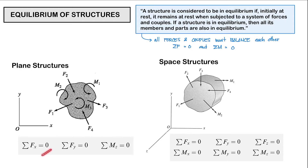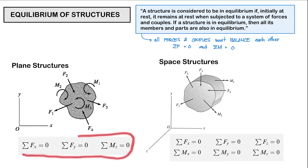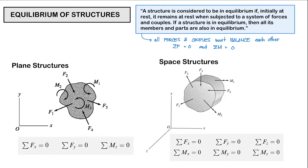We have summation of forces along x, that must be zero; summation of forces along the y axis, again that must be zero; and then summation of moments at any point should be equal to zero. Once these conditions have been satisfied, we can now say that our plane structure is in equilibrium.